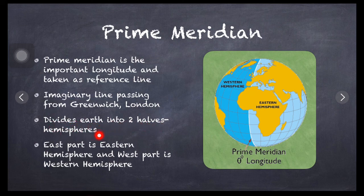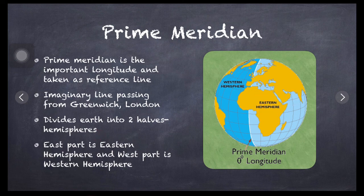Prime meridian divides earth into two equal halves, two equal hemispheres: eastern hemisphere to the right side of prime meridian and western hemisphere to the left side of prime meridian.